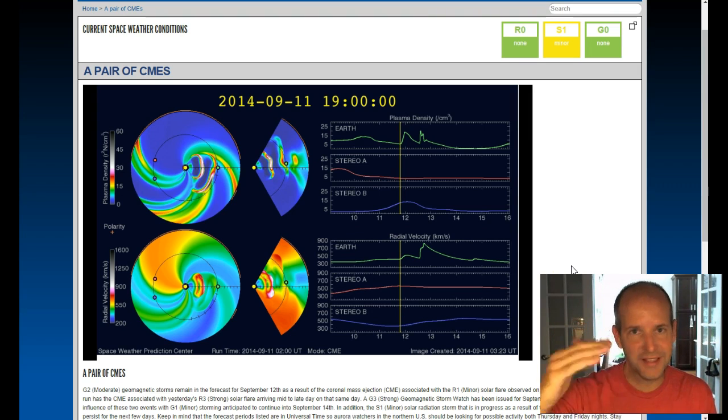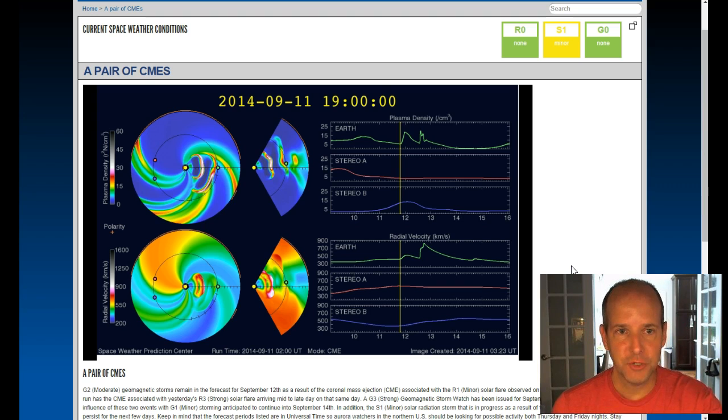This is at the highest level. Now, once you get to the X level, there's a numeric scale as well. This was at the lower end of the X scale. So this was an X 1.6 or so. We've had much bigger. But the thing that's interesting about this flare is it was directly right at the Earth.